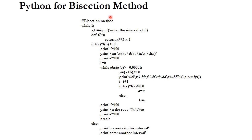Now we will see the Python code for the bisection method. We start with an infinite while loop: while 1. Then we input the assumed a and b values and define the function. We check whether the inputted a and b are such that f(a) and f(b) are of opposite signs. If they are, we proceed; otherwise the user is prompted with 'no roots in the interval, enter another interval', and the loop repeats.